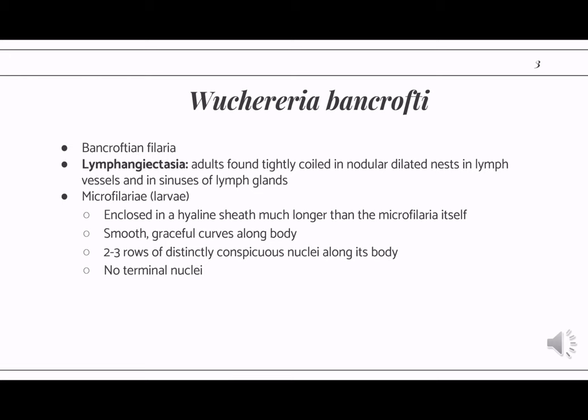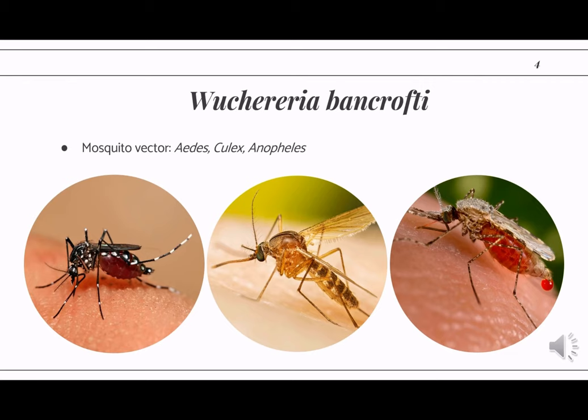Filariasis, whether in the lymphatics, subcutaneous tissues, or serous cavities, will always be transmitted by an arthropod vector. For Wuchereria, we have three genera of mosquitoes that can transmit this infection: Aedes, Culex, and Anopheles. This information was taken from the CDC, wherein they mentioned these three vectors.